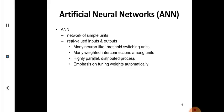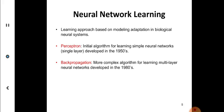Artificial neural network is a network of simple units with real value input and output. Many neurons like threshold switching units. Highly parallel distributed process with emphasis on tuning weights automatically. Neural network learning happens in two ways based on modeling adaptation in biological neural systems: one is called perceptron and back propagation. These two learning styles.